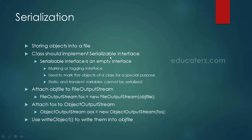The Serializable interface is located in the java.io package and it is an empty interface — that is, it has no methods inside it. Such interfaces are called marking or tagging interfaces, basically used to mark the objects of a class for a special purpose. For example, if a class implements the Serializable interface, that means that class's objects are meant to be stored in a file.